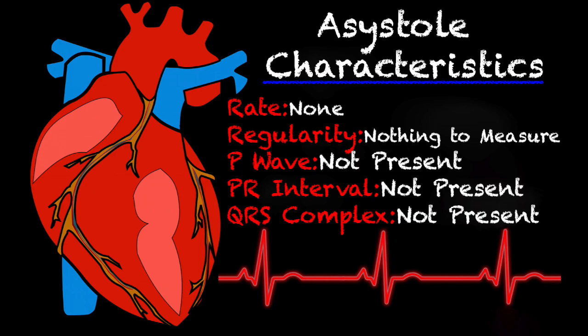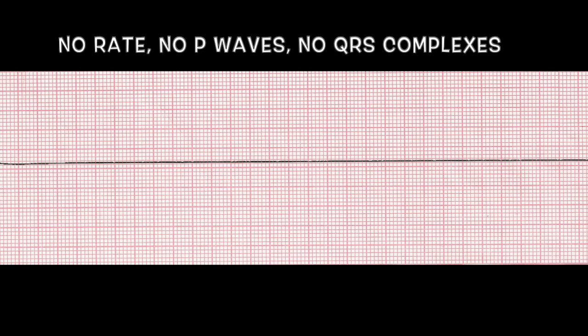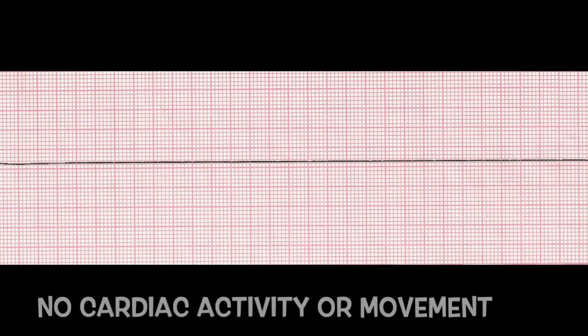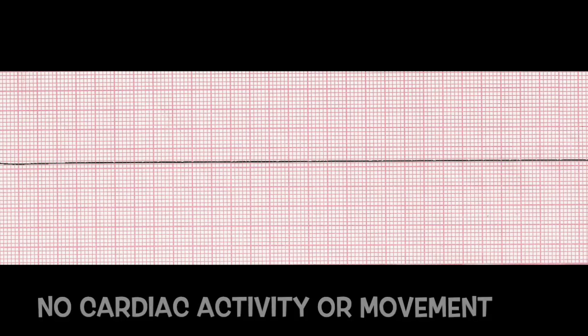Let's take a look at that. Taking a look at it on an actual strip, you'll see that there's no rate, no P waves, no QRS complexes, meaning that there's no cardiac activity or movement of the heart.